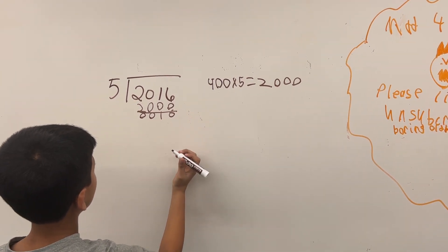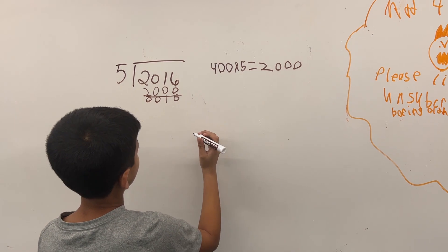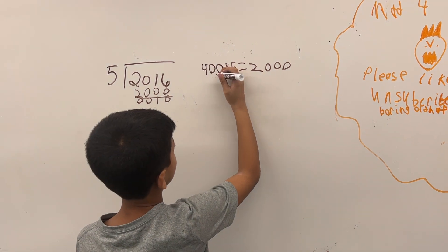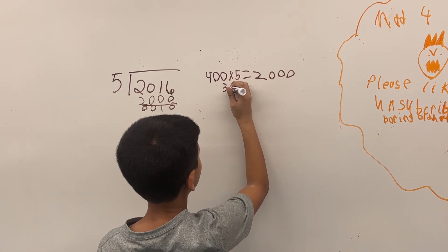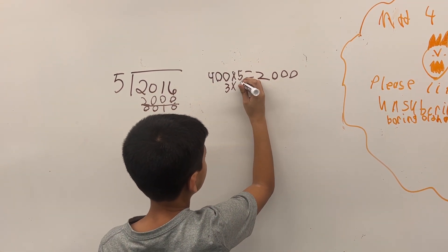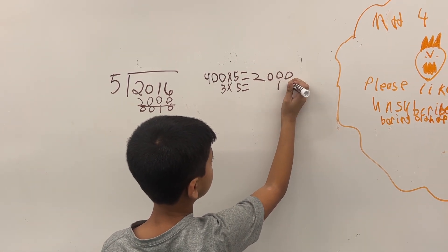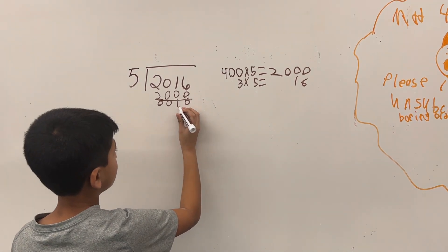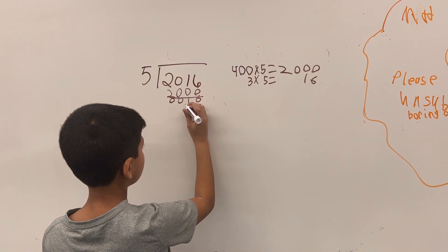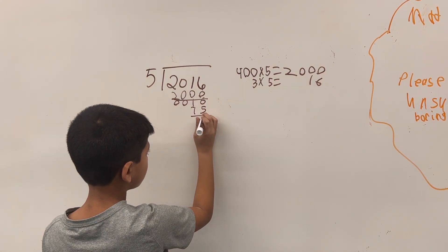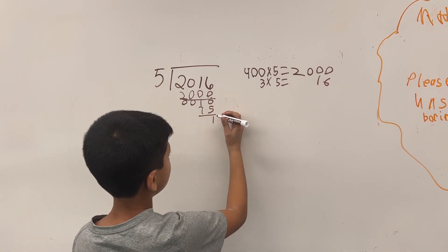And then since we know 5 times 3 is 15, we write that over here. Then we subtract to get our remainder of 1.